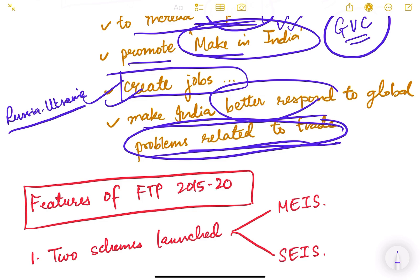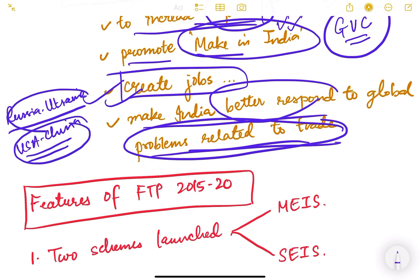For example, recently the Russia-Ukraine war happened, and in the near past there was also the US-China trade war. Our foreign trade policy should have guidelines so that whenever there are global trade problems, we are able to respond to them effectively.